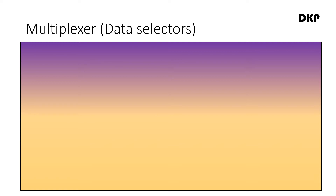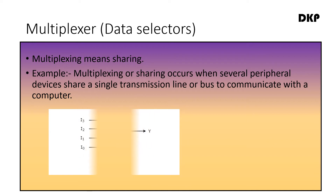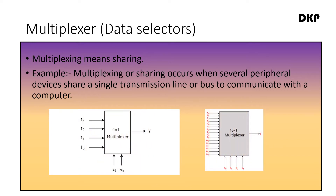First of all, let us see what is a multiplexer or data selector. Multiplexer is also called data selector. Multiplexing means sharing. For example, multiplexing or sharing occurs when several peripheral devices share a single transmission line or bus to communicate with a computer. There are different types of multiplexers like 4-to-1 multiplexer, 16-to-1 multiplexer, etc.